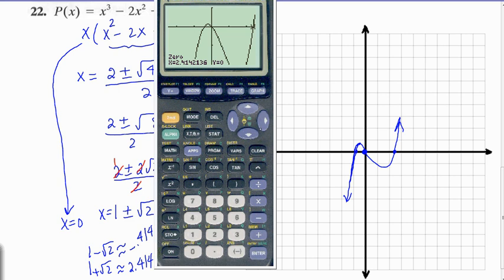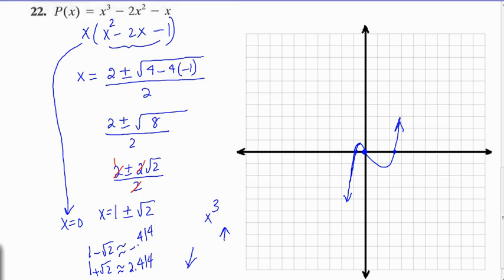We could have, since we already knew our answer, instead of doing this second 0, we could have just pressed trace. And we could have put 1 plus radical 2. And that would have given us a 0. We could have also put 1 minus radical 2. And that should have given us a 0. So, we've done many different ways of double-checking our work.